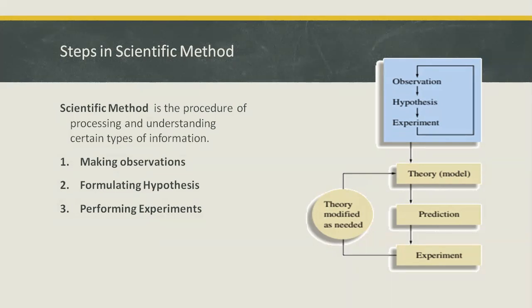The third step: performing experiments. Experiments are systematic observations or measurements, preferably made under controlled conditions in which a single variable changes. An experiment is carried out to test hypothesis. This involves gathering new information that enables a scientist to decide whether the hypothesis is valid or not, that is, whether it is supported by the information learned from the experiment.